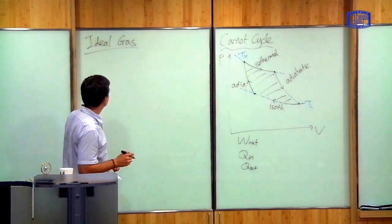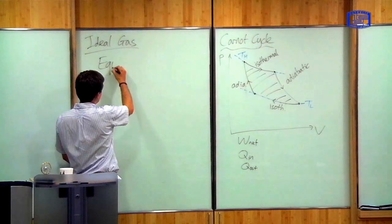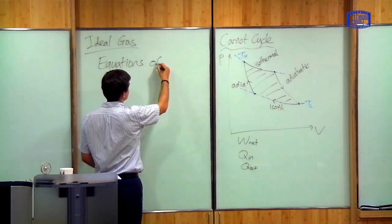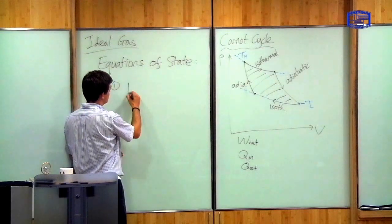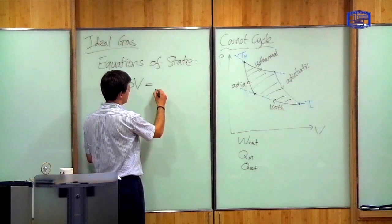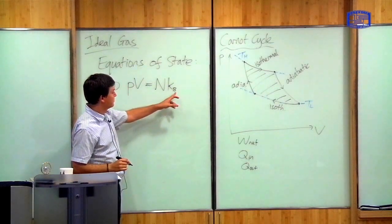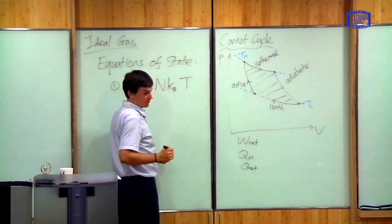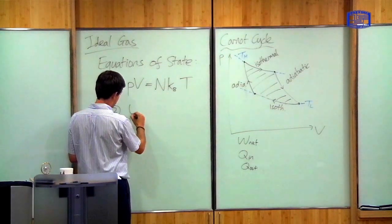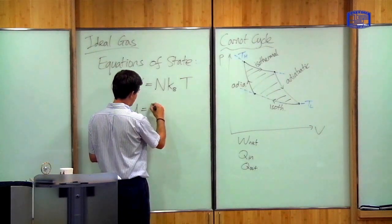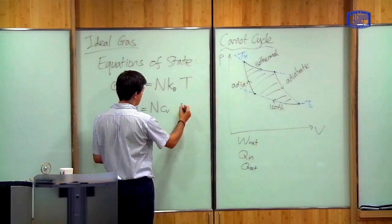The ideal gas is a kind of idealized, simplified set of equations for how a gas behaves. There are two equations which tell you everything you need to know, known as the equations of state. The first tells you that pressure times volume equals the number of particles N times Boltzmann's constant KB times the temperature in Kelvin. The second tells you that the internal energy U equals N times the constant-volume heat capacity CV times the temperature.